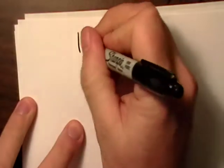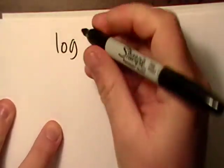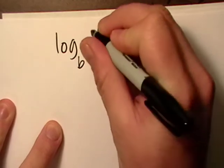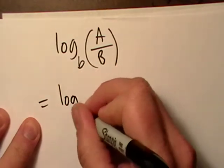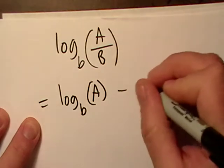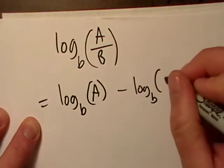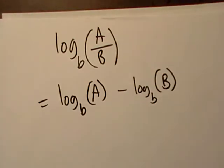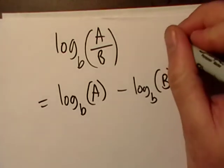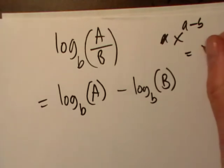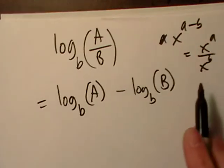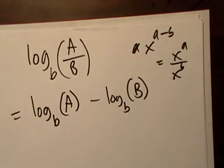Next is kind of the same animal, but not really. I'm going to do log base b of a divided by b. This is the quotient rule. And this is simply equal to, notice how these kind of look similar to the exponent rule. You know, like x to the a minus b is equal to x to the a over x to the b up there.